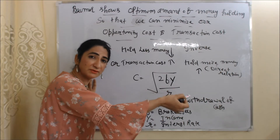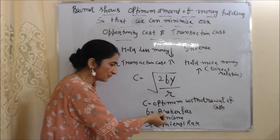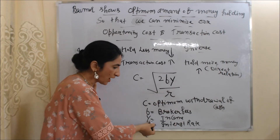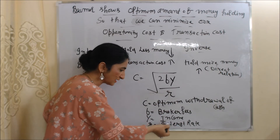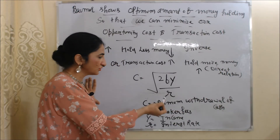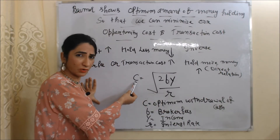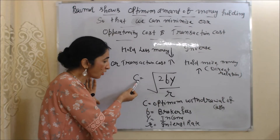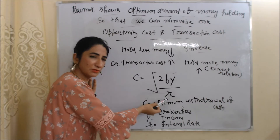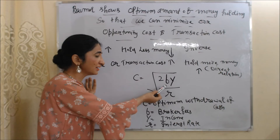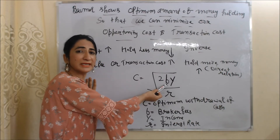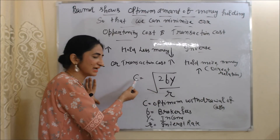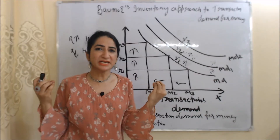In the formula C = √(2bY/r): C tells us how much money we are holding, b is the broker fee or transaction cost, Y is our income, and r is the interest rate. You can see that C (money holding) and r (interest rate) have an inverse relation. On the other hand, b (broker fee/transaction cost) and C have a direct relation.